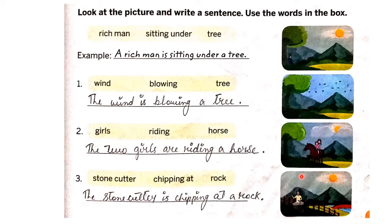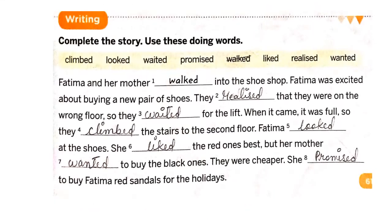Again we have one more creative writing — story writing with pictures. First, complete the story using these doing words. The doing words given are: climb, look, waited, promised, walk, like, realize, wanted.